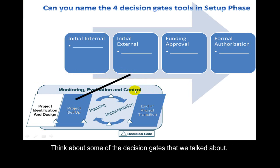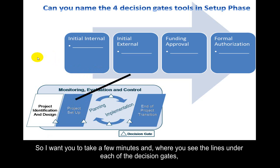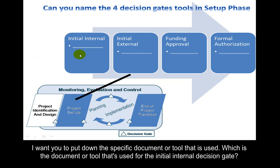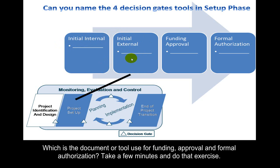Think about the decision gates. There were four in particular that we covered in detail during the PMD Pro 1 course. I want you to take a few minutes and identify the specific document or tool used for each: the initial internal decision gate, the initial external decision gate, and funding approval and formal authorization.